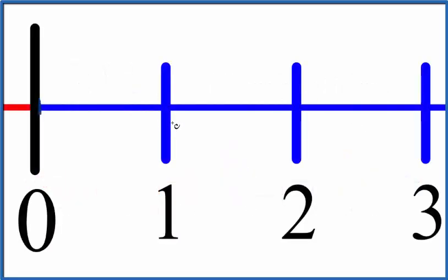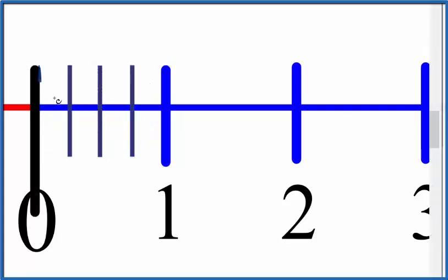We're talking about 3 fourths. We know it's less than 1 here. So let's divide this area right here into 4 equal pieces. 1 fourth, 2 fourths, 3 fourths.